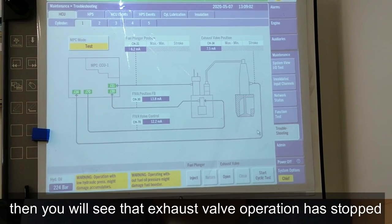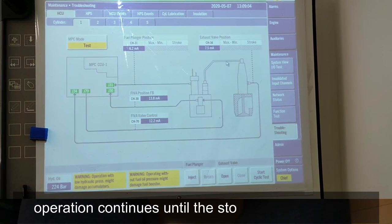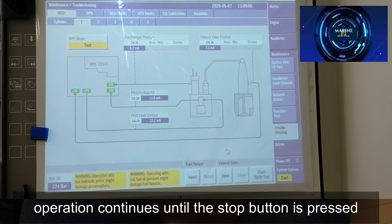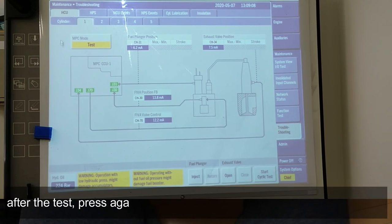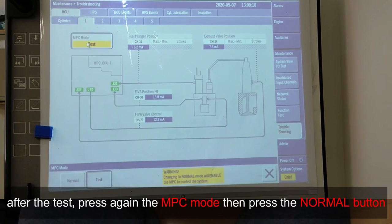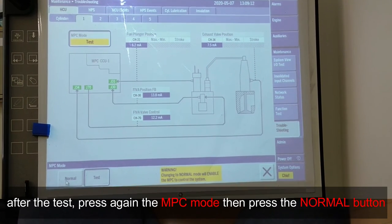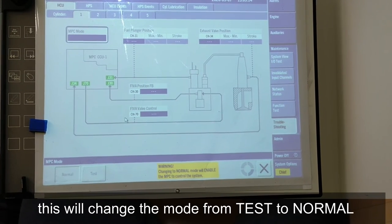Now you will see the exos valve operation is stopped. Operation continues until the stop button is pressed. After the test, press again the MPC mode, then press the normal button. This will change the mode from test to normal.